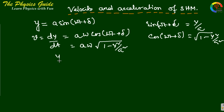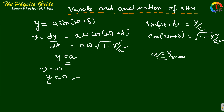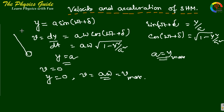From this we can say that when y = a, which is the maximum, v equals zero. And when y = 0, v = aω, which is the maximum velocity. Physically, if this is a pendulum and we take y = a·sin(ωt + δ) with δ = 0, the oscillation starts from the origin.